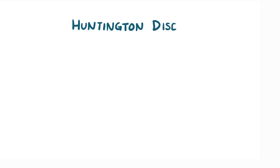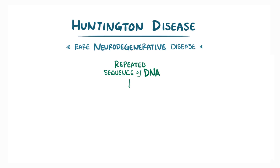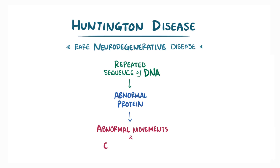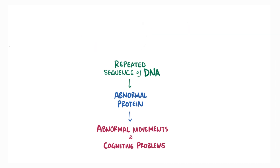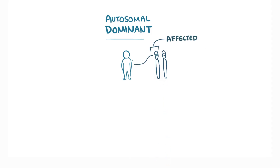Huntington disease, or HD, is a rare neurodegenerative disease that involves a repeated sequence of DNA that causes an abnormal protein to form, leading to abnormal movements and cognitive problems. Huntington disease is an autosomal-dominant genetic disorder, which means that one affected copy of the gene is enough to cause disease.